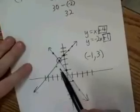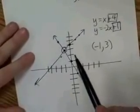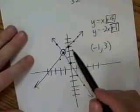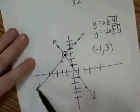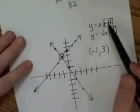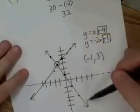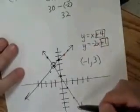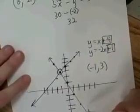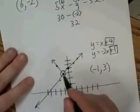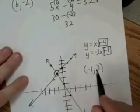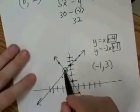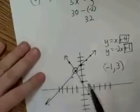If we take a look at our graph again, if we come back down here, this explains why. This is y equals x plus 4. Everything on this line is a correct answer for y equals x plus 4. This line is y equals negative 2x plus 1. Everything on that line is a correct answer for negative 2x plus 1. This spot right here, negative 1, 3, is the one point that works for both equations. That makes it the solution.